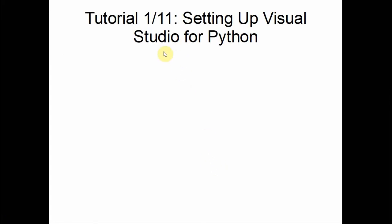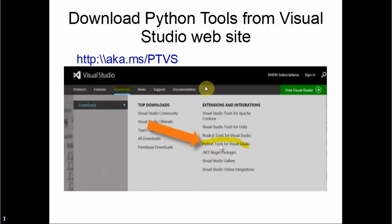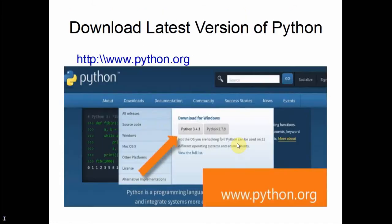Setting up Visual Studio for Python is the first tutorial, about three minutes long. You can download the Python tools for Visual Studio from their website — just click the link for Python Tools for Visual Studio, also called PTVS.